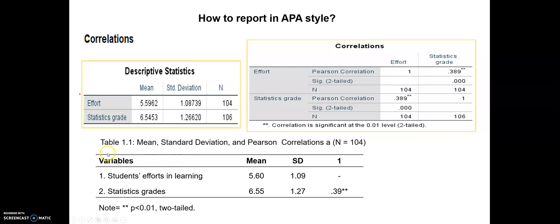You can use this kind of table based on APA style in your writing. In the table you can write your variables — student effort in learning and statistics grades — in the left-hand column, then put the mean and standard deviation from the descriptive table, and then write the correlation coefficient with two asterisks beside it, along with a small note. That's all. See you in the next video. Bye-bye.